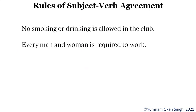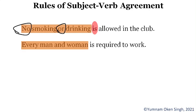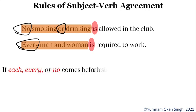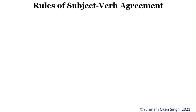Let's look at: 'No smoking or drinking is allowed.' When a sentence has 'no' or 'or' before the subject it takes a singular verb. Similarly, if the subject is preceded by 'every,' it also takes a singular verb. So subjects preceded by 'every' or 'no,' and subjects joined by 'or,' always take a singular verb. This is Rule Number Seven.